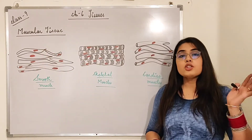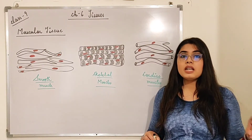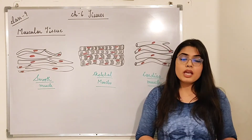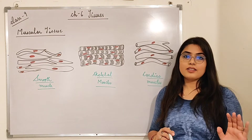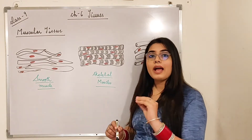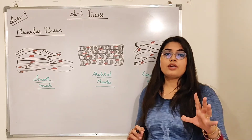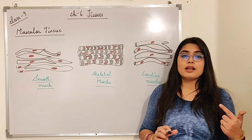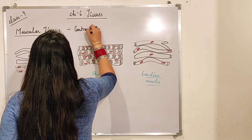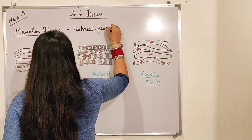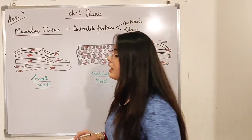Muscular tissue has special proteins called contractile proteins, as mentioned in the previous video. These contractile proteins give them the ability to contract and relax. So muscular tissues have contractile proteins which help in contraction and relaxation. Now there are three types of muscular tissues: the smooth muscles, the skeletal muscles, and the cardiac muscles.